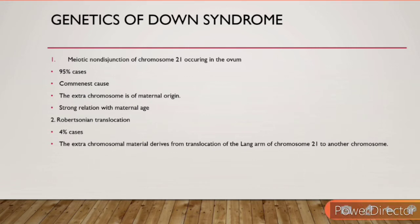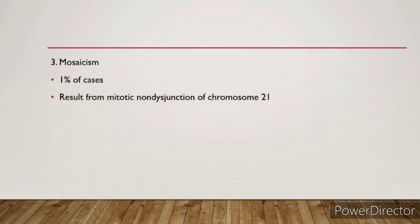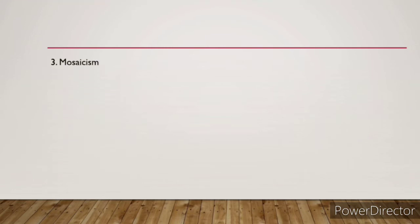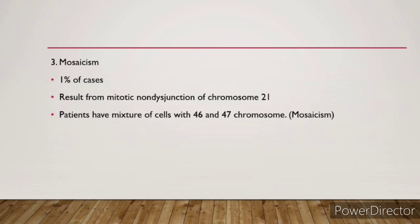In Robertsonian translocation, the extra chromosome material derives from translocation of the long arm of chromosome 21 — pay attention to this. Cases are frequently familial. The third cause is mosaicism, seen in only 1% of cases, resulting from mitotic non-disjunction. Patients have a mixture of cells with 46 and 47 chromosomes, and there is no relation with maternal age.